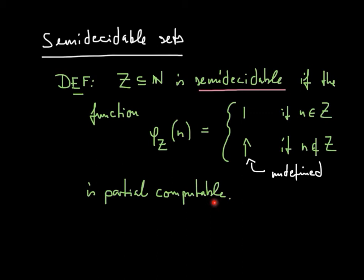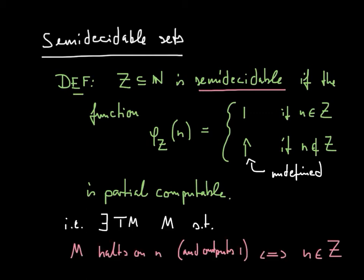So what does that mean? Well, for this function to be partial computable, we need to have a Turing machine M so that M halts on input N and outputs 1 in that case if and only if N is in Z. So semi-decidable now refers to positively decidable in the sense that when I run M on my input N, and if M halts and outputs something, then I can be sure that there's number, so the input was in the set Z.